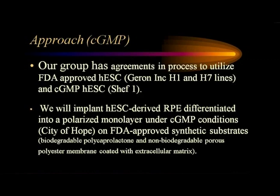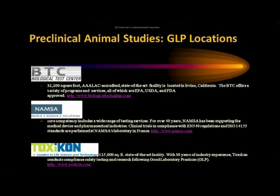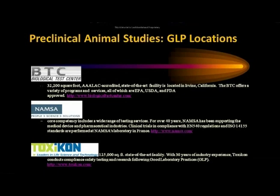How would we go about doing these sorts of things? We clearly have to use FDA-approved lines and work in areas with good manufacturing and good laboratory practices. We've been in discussions with Geron and also with the Sheff 1 line from Sheffield. We've also begun collaborations with the City of Hope on how to take these cells and put them on polymers — both biodegradable and non-degradable. Preclinical testing has to be done with good laboratory practices, and we have relationships with BTC down in Irvine. So we can get these constructs, do the animal studies in a controlled environment, and then submit this data to the FDA to begin patient trials.